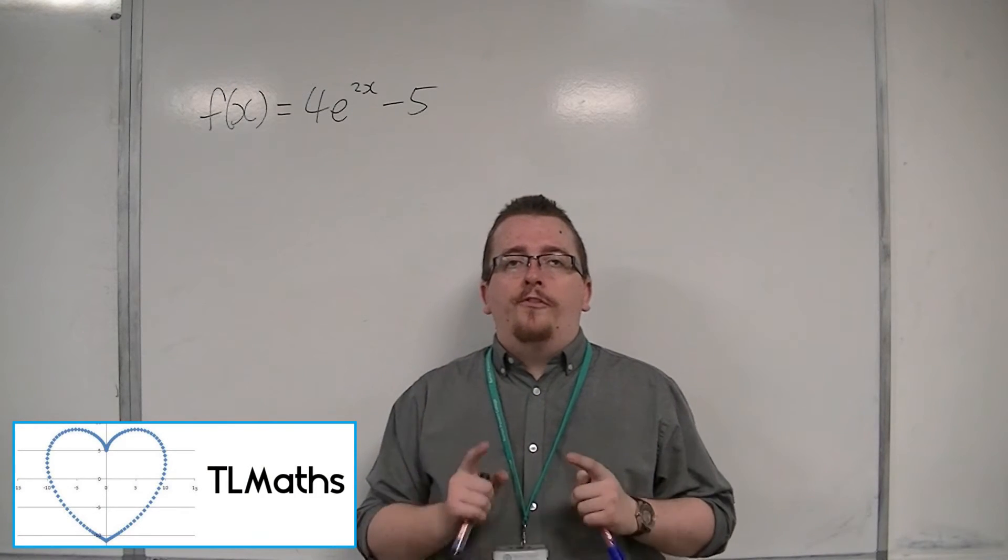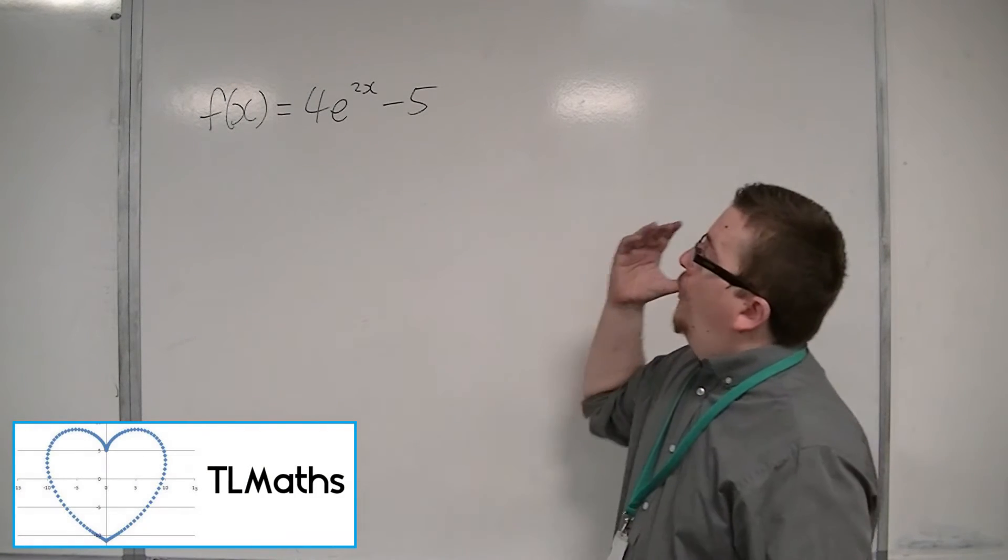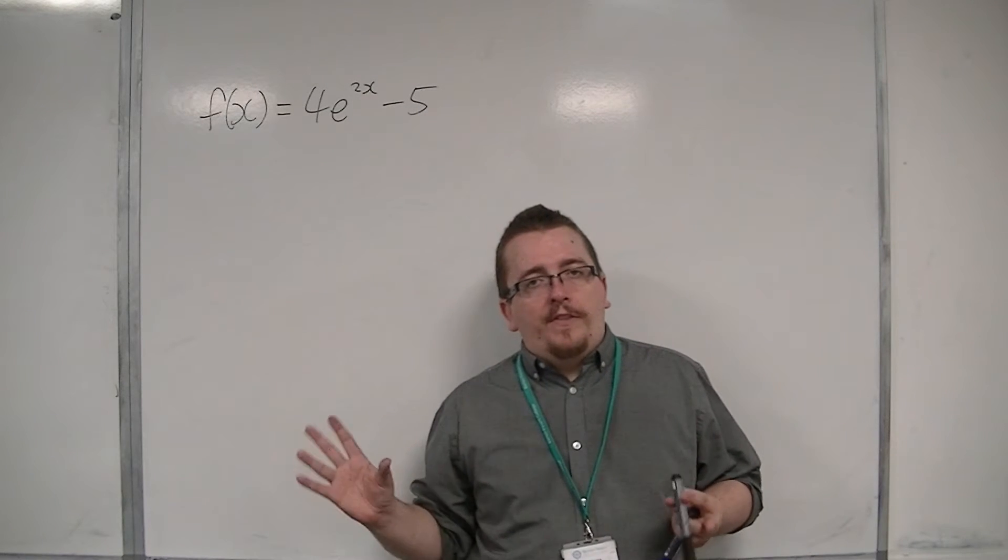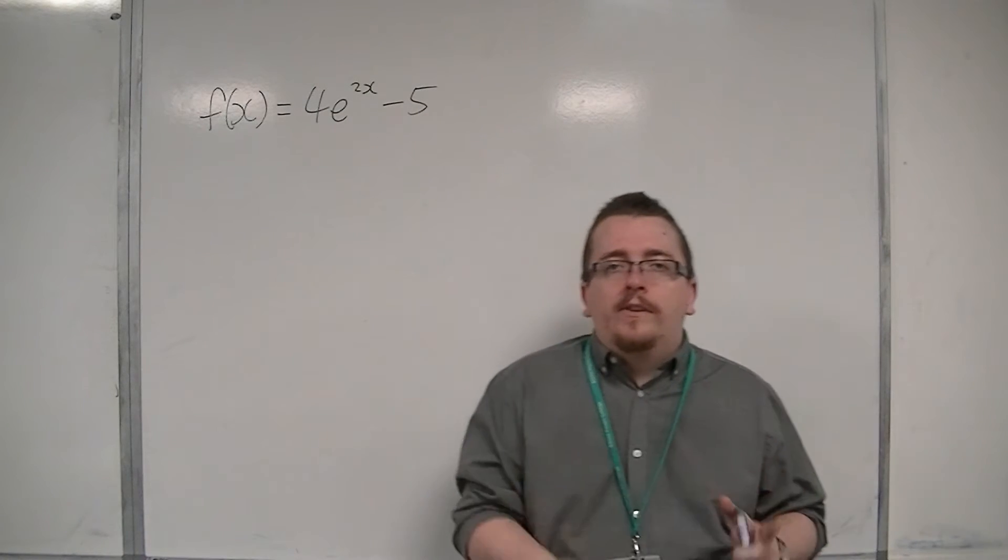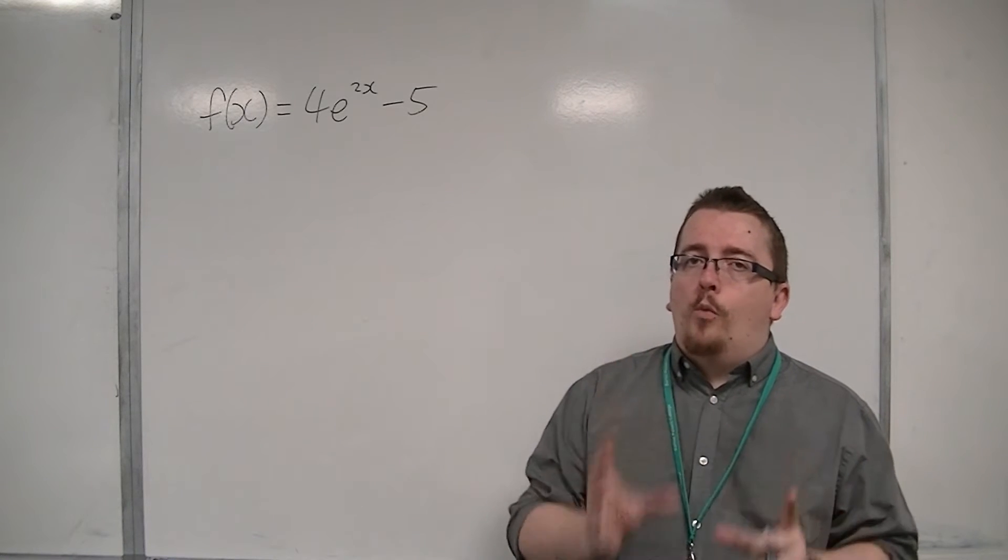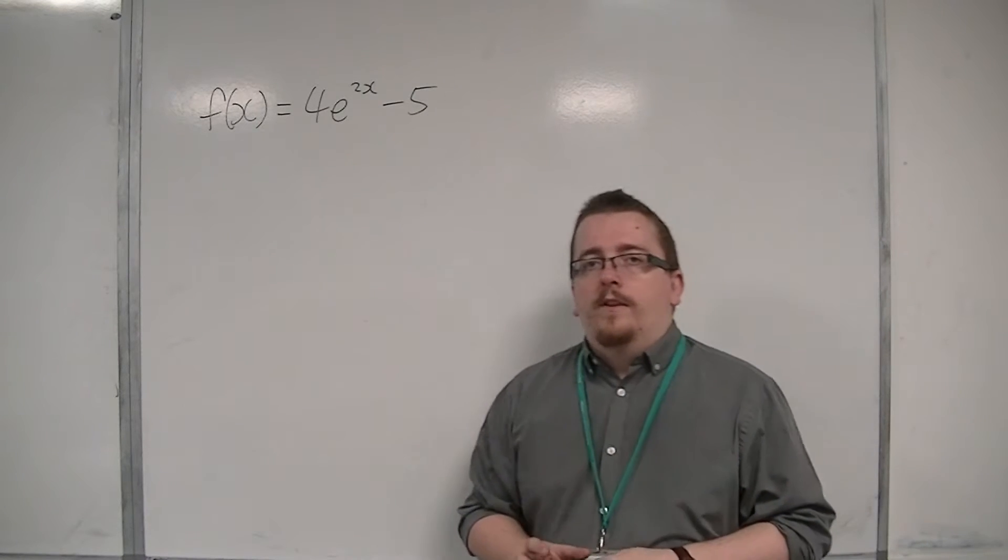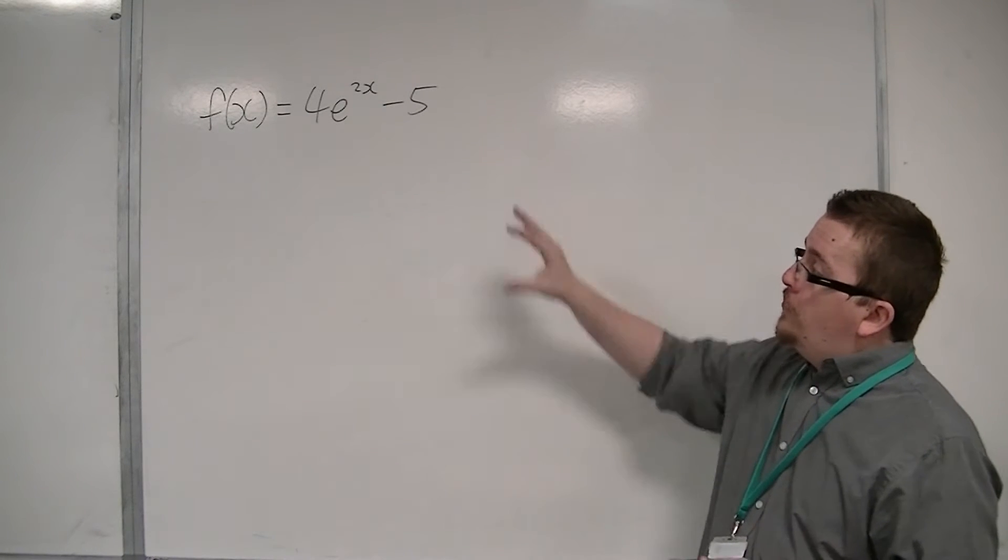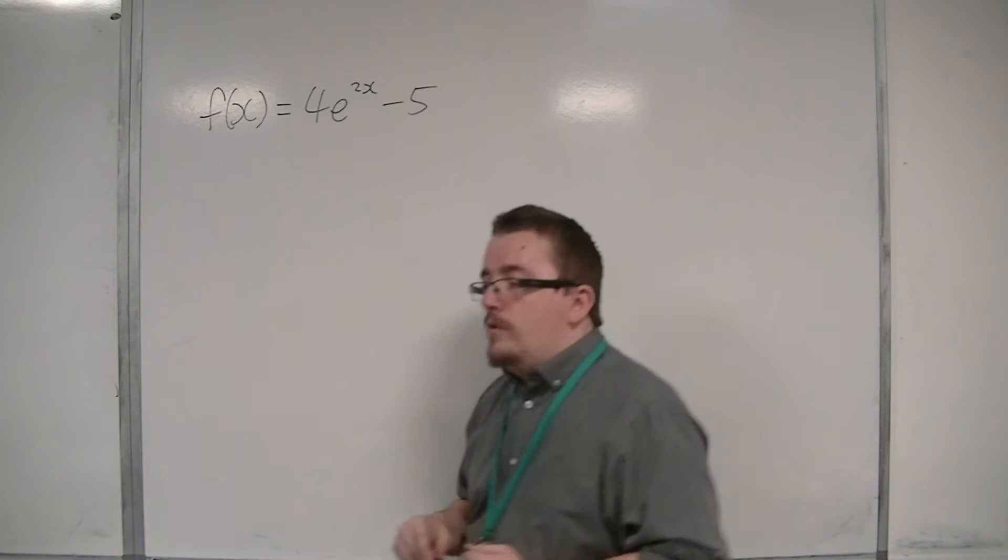So let's say we want to find the inverse function of 4e to the 2x minus 5. The first thing to realize is that this is a graph that is 1 to 1. So we don't have to deal with restricting the domain in this case. We can go straight into it, and this is the process.